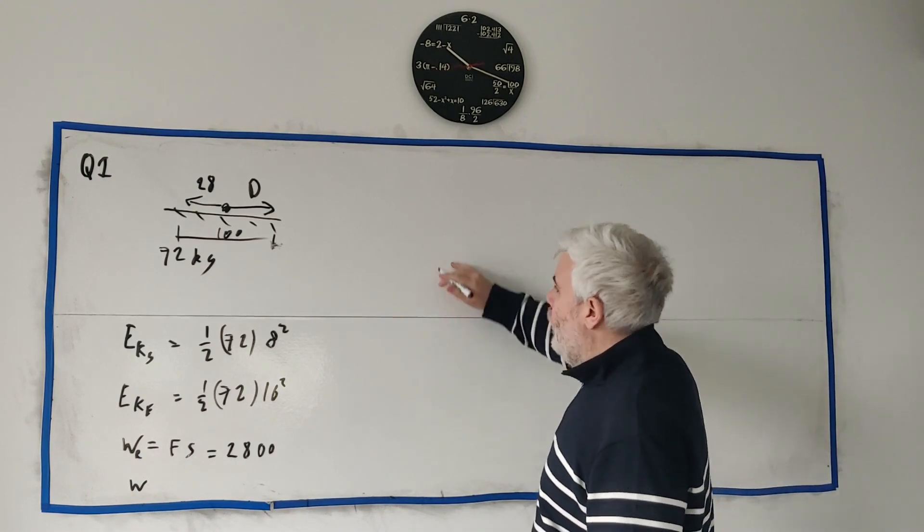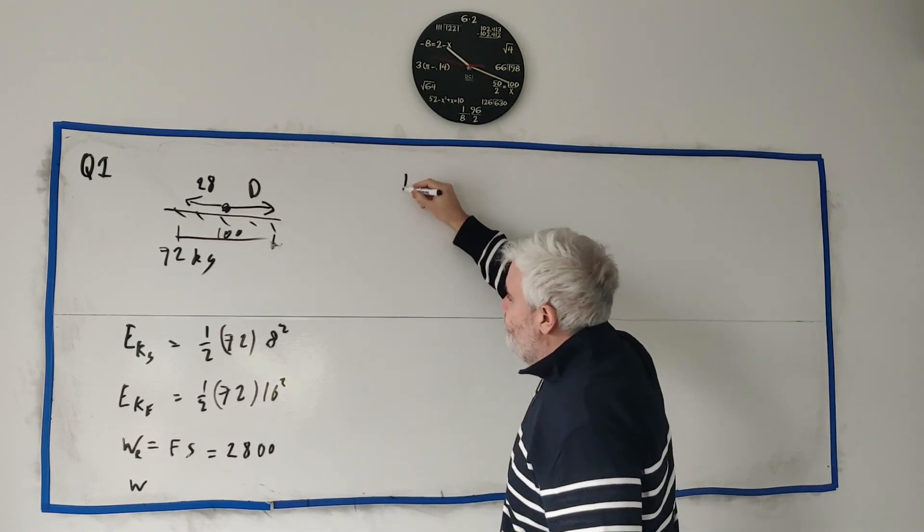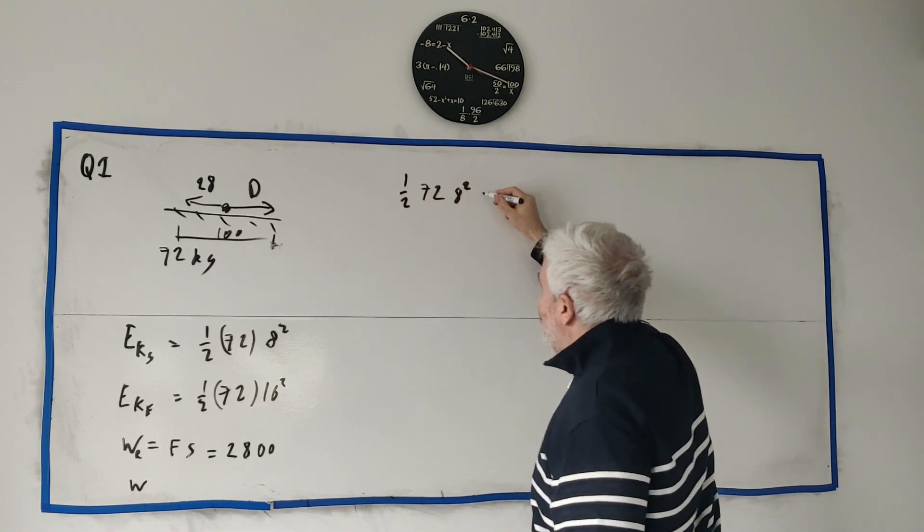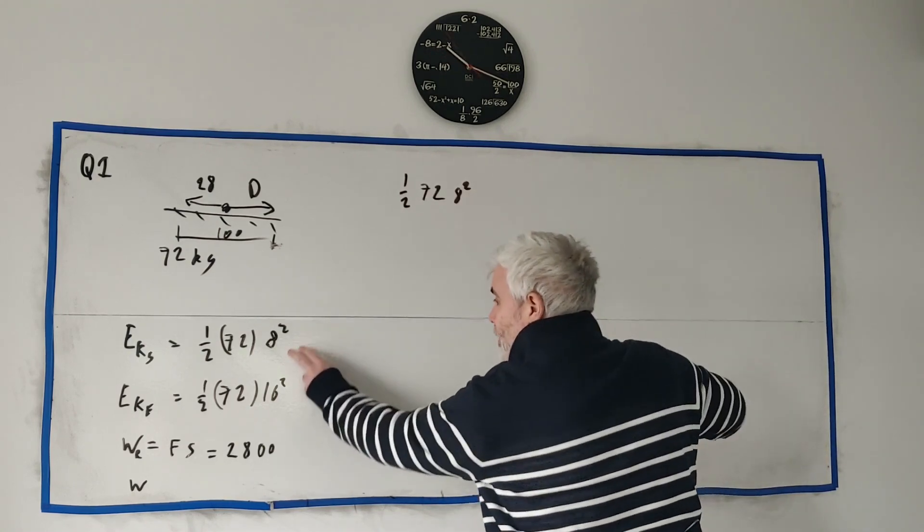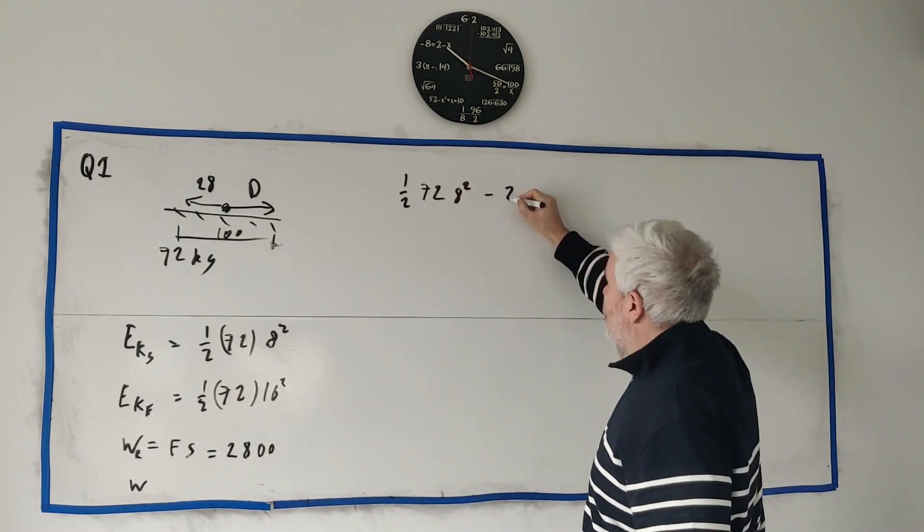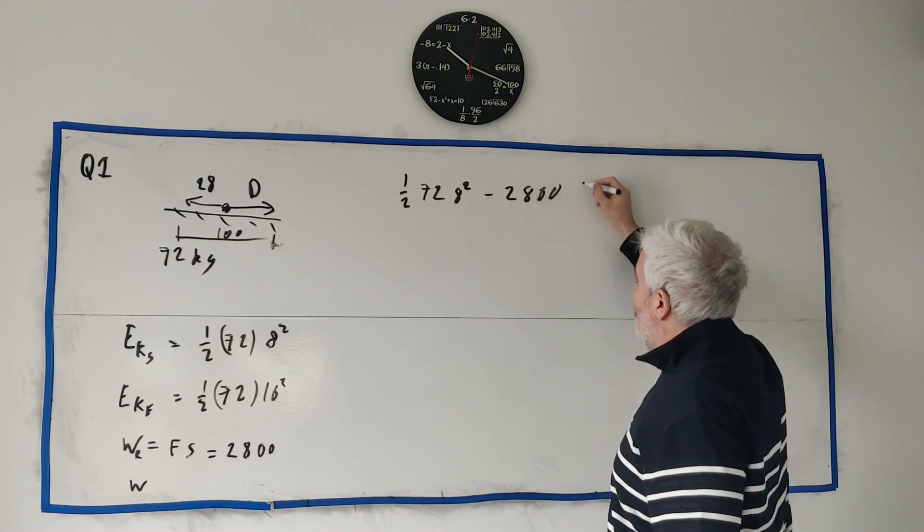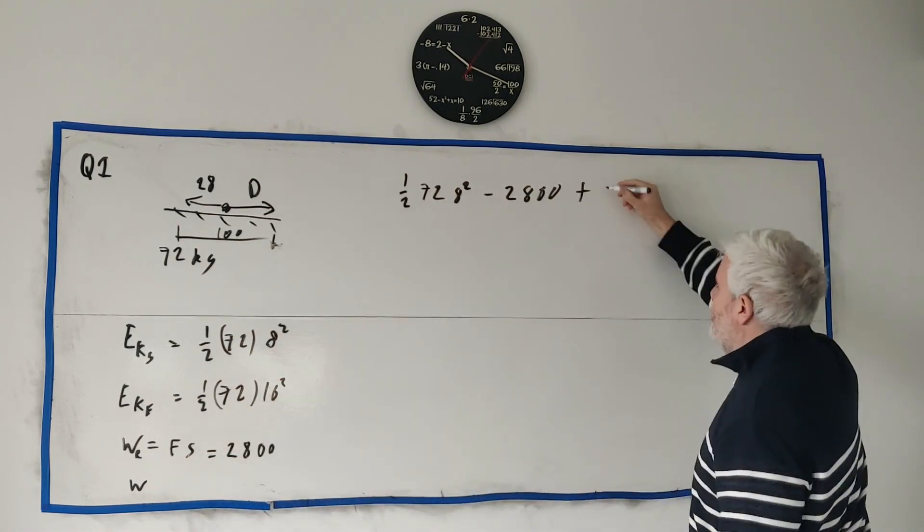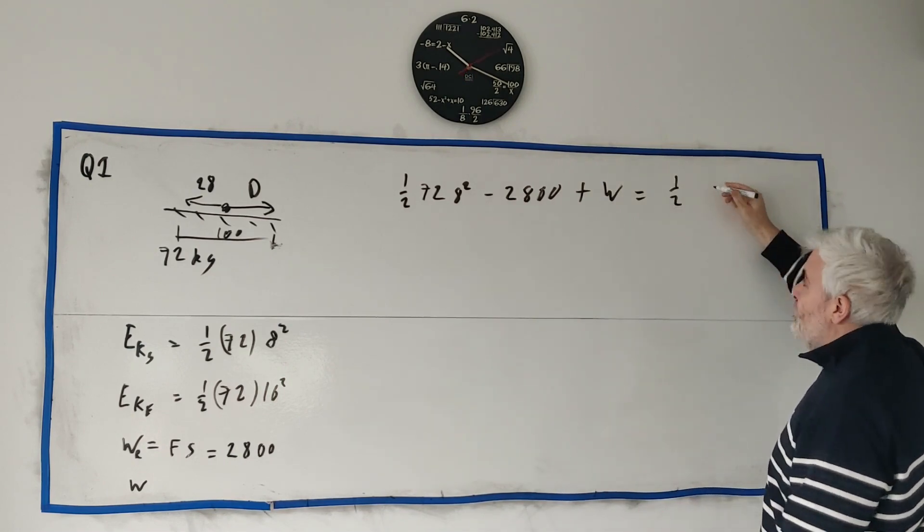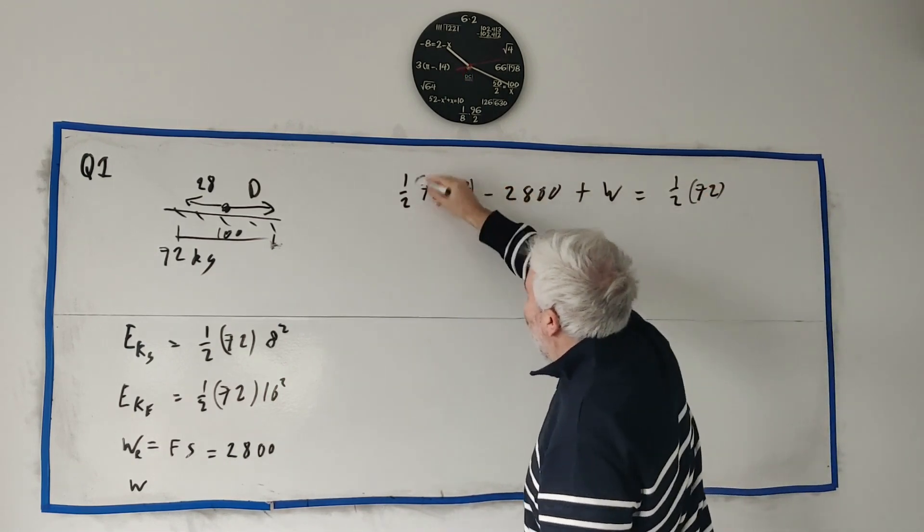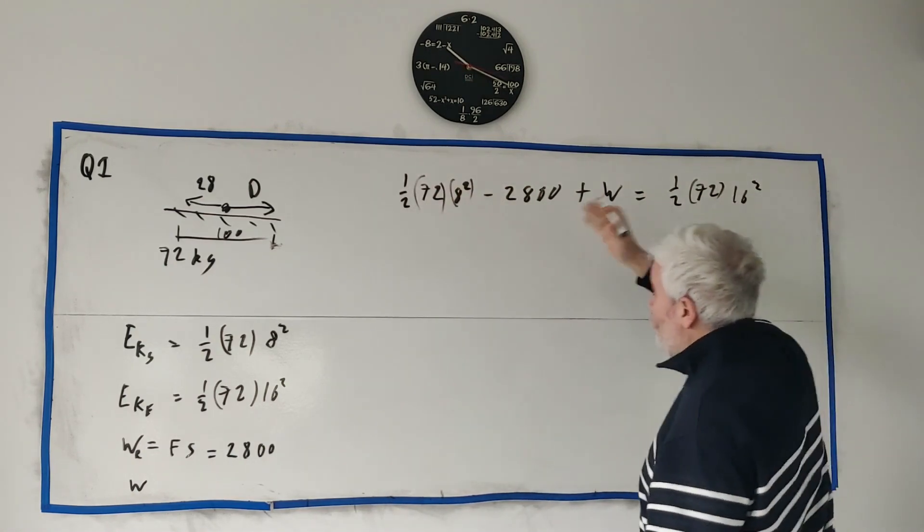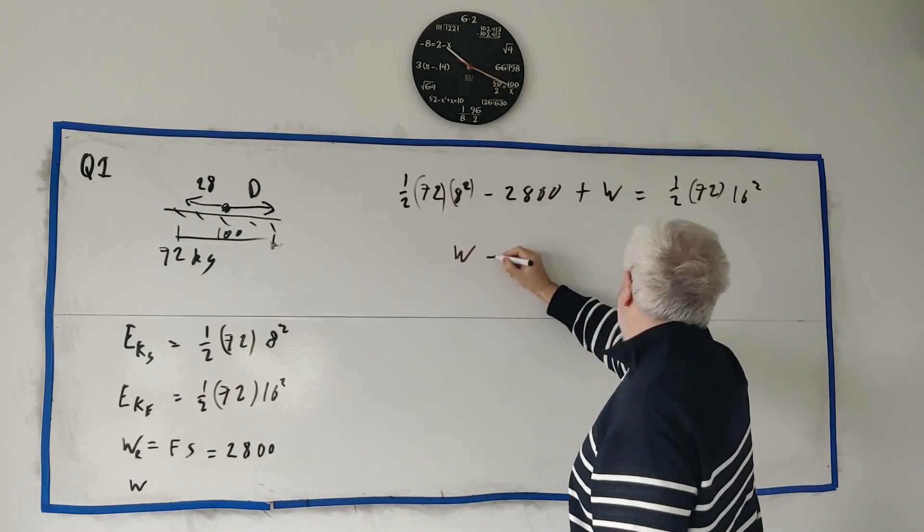Again, we don't need the work force this time. They want the answer. They want this W at the end. Put all that in one line. I would get the starting energy. And we're nearly finished already. The starting energy, take away the work by the resistance, minus 2800, plus the work done by our cyclist, plus W, must equal the kinetic energy at the end. A half 72 times 16 squared. Rearrange that. We'll get W is equal, let's put in some actual numbers here.